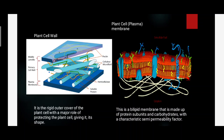The next cell organelle is the plasma membrane. This is a bilipid membrane made up of protein subunits and carbohydrates, with the characteristic of semi-permeability. There are different models mentioned by different scientists. The main function of this membrane is transport; it is semi-permeable and helps in the transportation of micro-molecules.